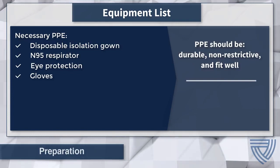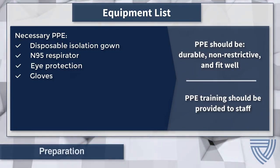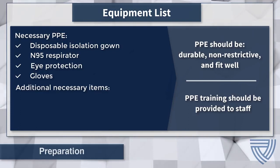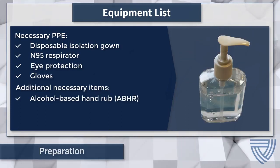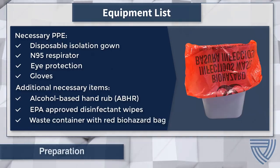What is important is that the PPE chosen must provide protection for the anticipated task and the level of isolation. PPE should be durable, non-restrictive, and fit well. Training on the correct use of PPE should be provided to staff. Additional items that will be required include alcohol-based hand rub, EPA-approved disinfectant wipes, and a waste container lined with a red biohazard bag.